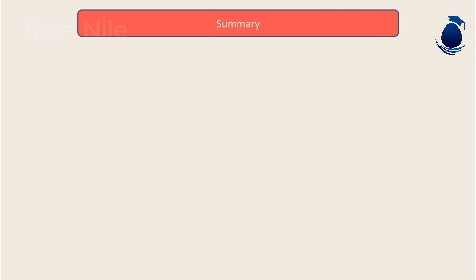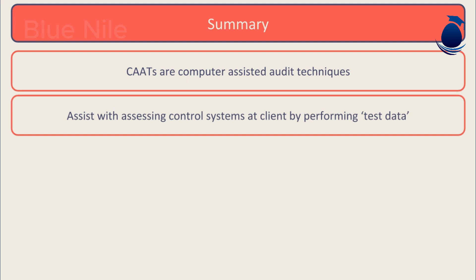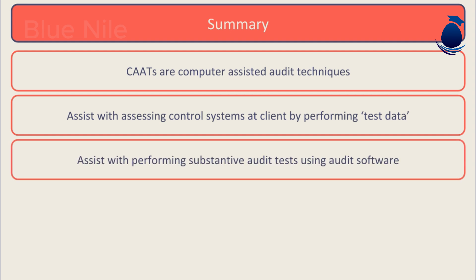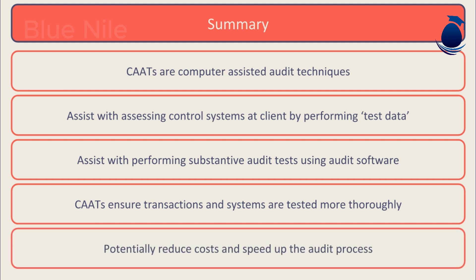To summarize, CATS are computer-assisted audit techniques. They assist with assessing control systems at the client by performing test data, and with performing substantive audit tests using audit software held by the audit firm. CATS ensure transactions and systems are tested more thoroughly, and potentially reduce costs and speed up the audit process.